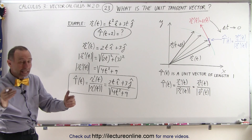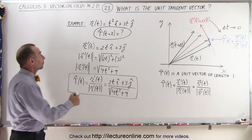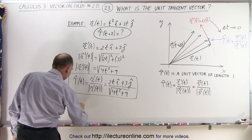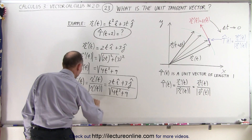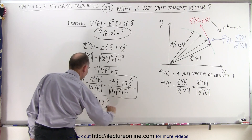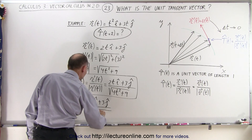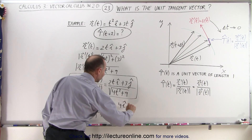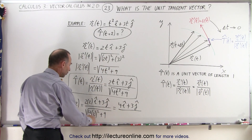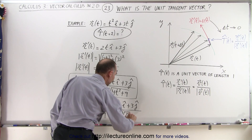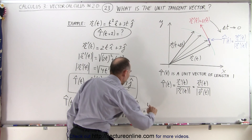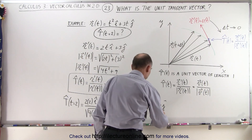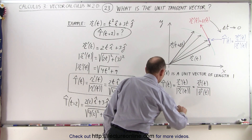It's hard to see that this is of length equal to 1, but let's evaluate it for t equal to 2. The unit tangent vector at t = 2 is equal to (2×2) in the i direction plus 3 in the j direction, divided by the square root of 4×(2²) + 9. That becomes 4i + 3j divided by the square root of 16 + 9, which is the square root of 25, so this is equal to (4i + 3j) / 5.